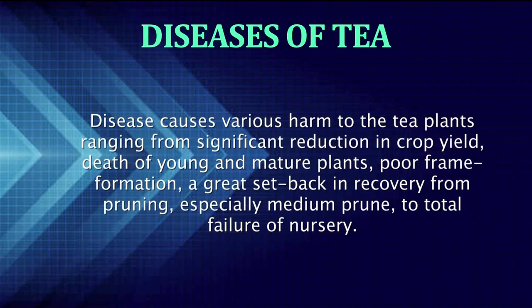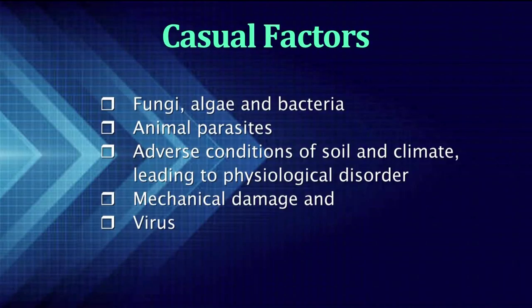Now, come to the tea diseases. Disease causes various harm to the tea plants, ranging from significant reduction in crop yield, death of young and mature plants, poor frame formations, a great setback in recovery from pruning (especially medium prune), and total failure of nursery plants. The causal factors in tea plantations are like fungi, algae, bacteria, animal parasites, adverse conditions of soil and climate, mechanical damage, and virus. However, bacterial and viral diseases and those caused by animal parasites are not so serious and have no commercial importance. Tea plants are mostly infected by fungal diseases.